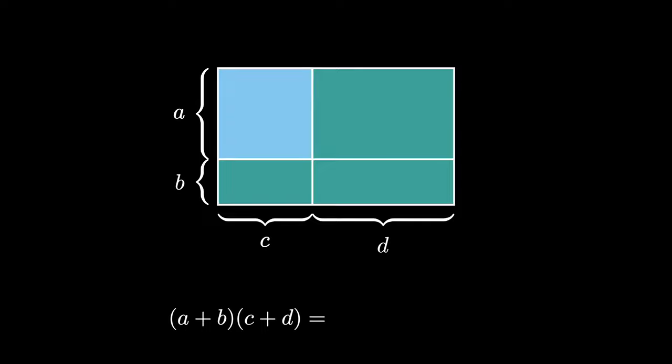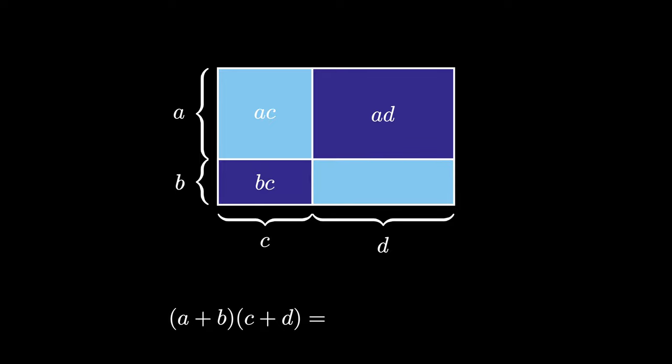Therefore, we have 4 regions. The top left rectangle has an area of A times C, the top right rectangle has an area of A times D, the bottom left rectangle has an area of B times C, and the bottom right rectangle has an area of B times D.